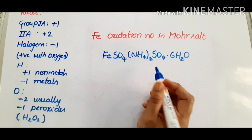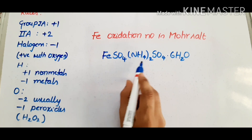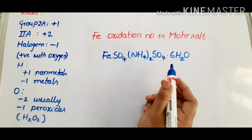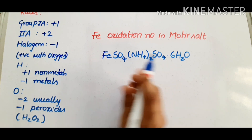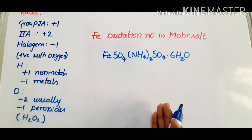You have to know the formula of Mohr's salt, that is FeSO4·(NH4)2SO4·6H2O. I will apply the rules and calculate it very easily.